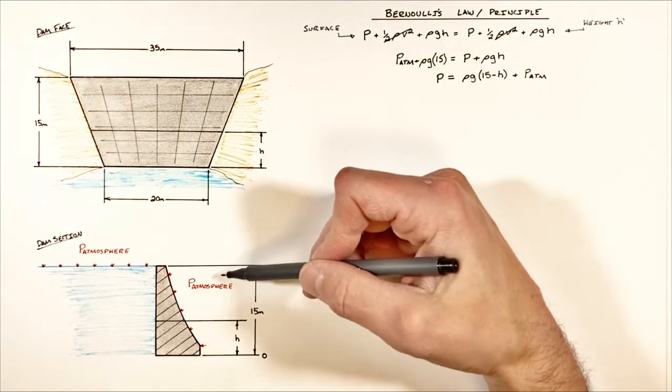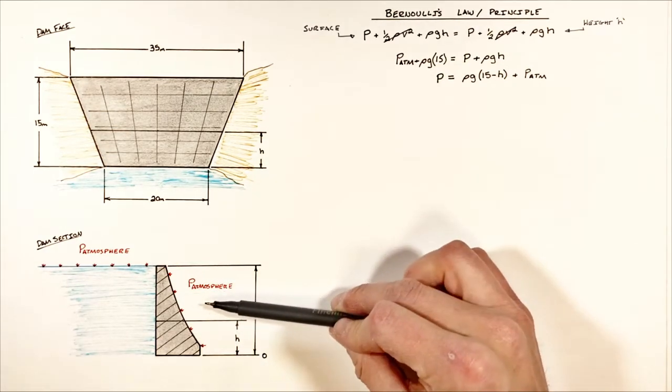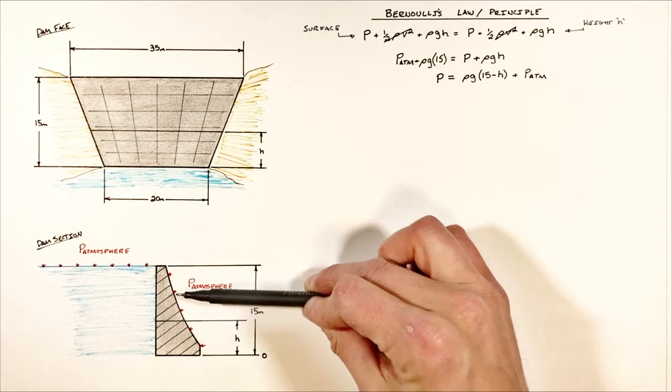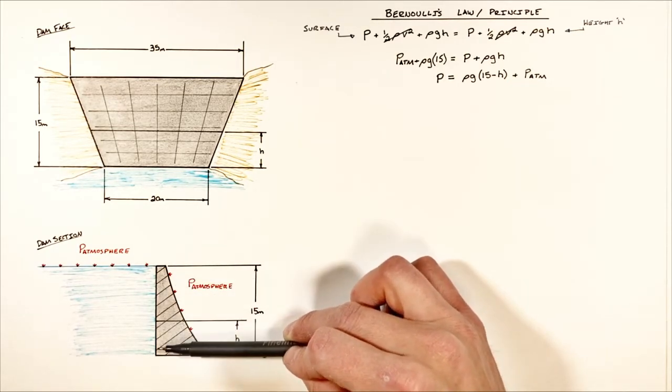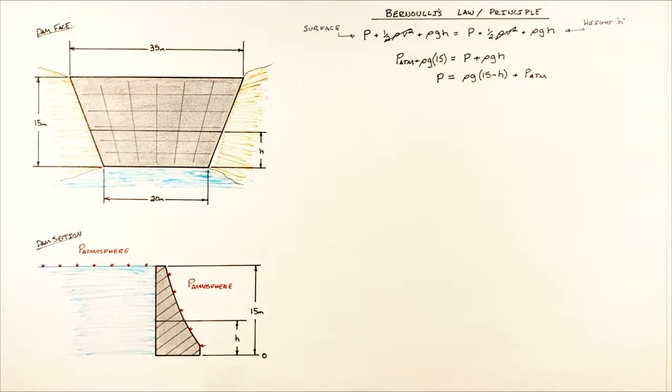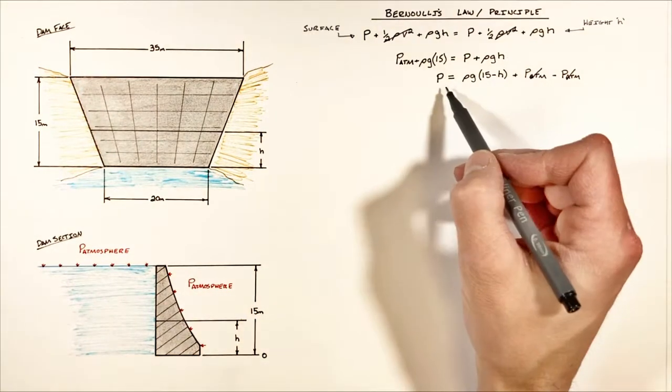You remember earlier I pointed out that this atmospheric pressure was going to cancel itself out, and that's because the atmospheric pressure on this dry side of the dam is pushing in the opposite direction of this pressure on the wet side of the dam, which ultimately means that atmospheric pressure cancels itself out.